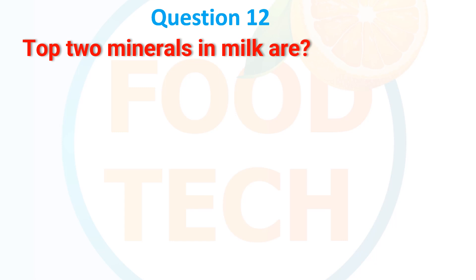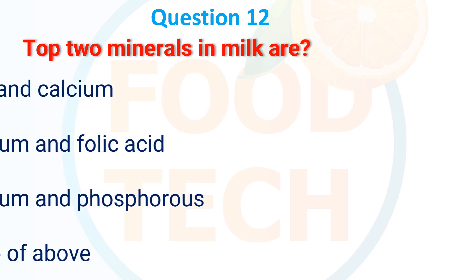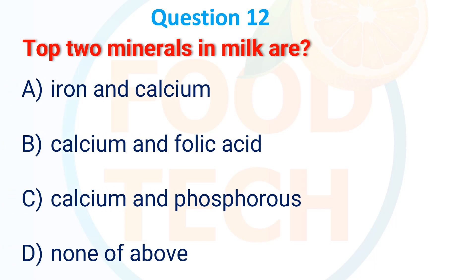Question 11: The flavoring compound of orange is — A. Limonene, B. Charcoal, C. Juniornene, D. Carbon. The answer is A. Limonene.